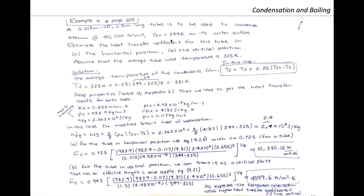We have all the data. We use the new effective film temperature equation: T_surface + 0.25(T_sat − T_surface), giving a new average condensate film temperature of 331 K. We read properties from Table 13, Appendix 2, and interpolate — since most equations in this chapter recommend interpolated properties for a good approximation.